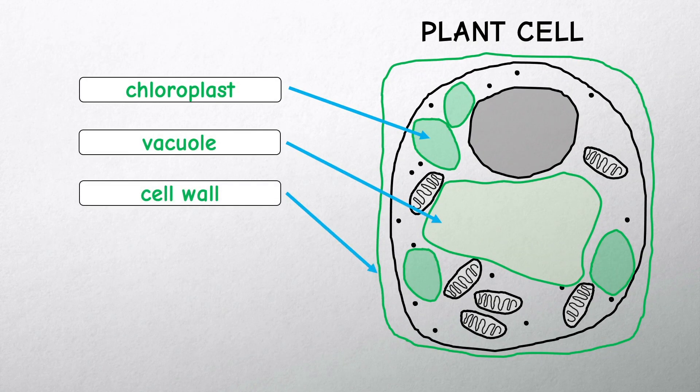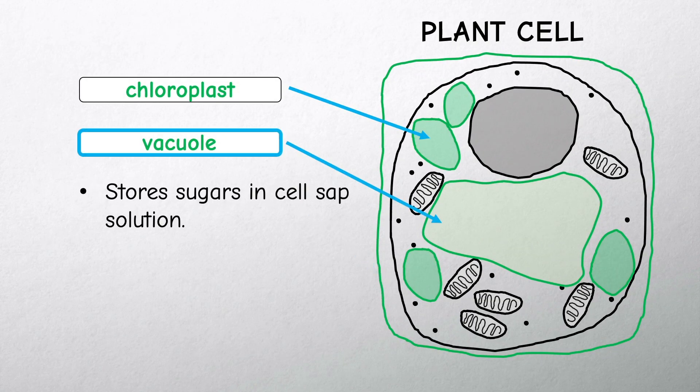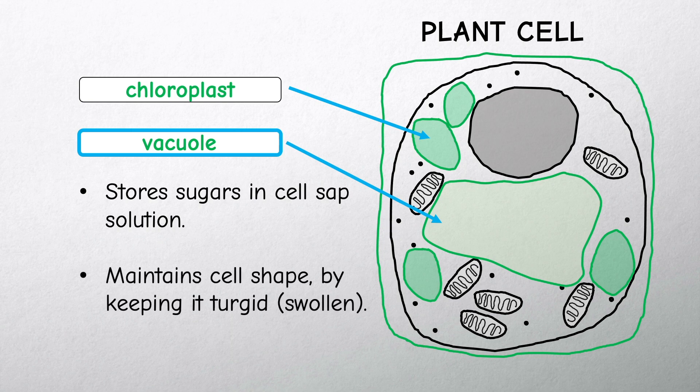Plant cells have a permanent vacuole that is used to store sugars in a solution called cell sap. The vacuole also helps maintain the shape of the cell by keeping it turgid or swollen.